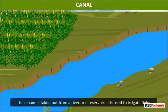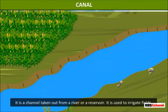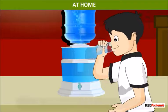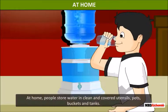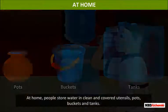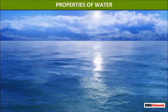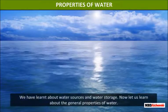A canal is a channel taken out from a river or a reservoir. It is used to irrigate fields. At home, people store water in clean and covered utensils, pots, buckets, and tanks.